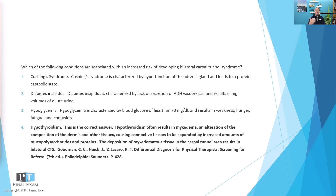Diabetes insipidus is different than diabetes mellitus. Diabetes insipidus is a problem where you don't have the anti-diuretic hormone being created or produced, or it's ineffectual, resulting in vast quantities of dilute urine. It's characterized by polyuria and polydipsia, simply because you're flushing out so much fluid — a huge amount of dilute urine with no sugar in it. In diabetes mellitus, blood glucose goes out through the urine, whereas in diabetes insipidus, you're just flushing water out of the system in vast quantities.